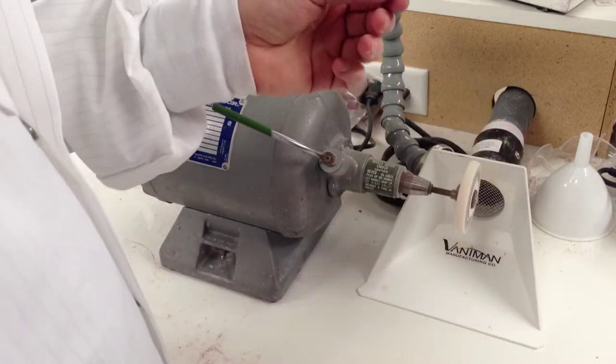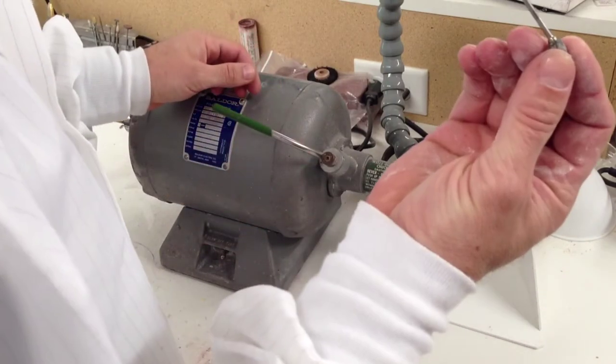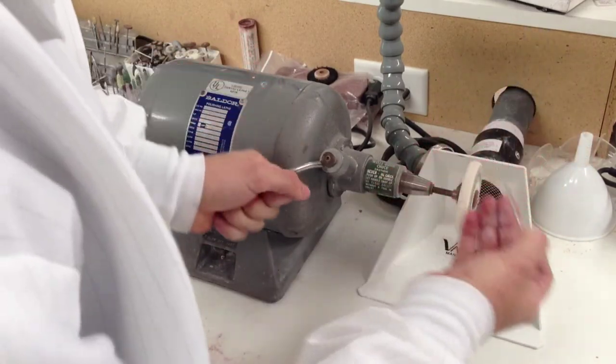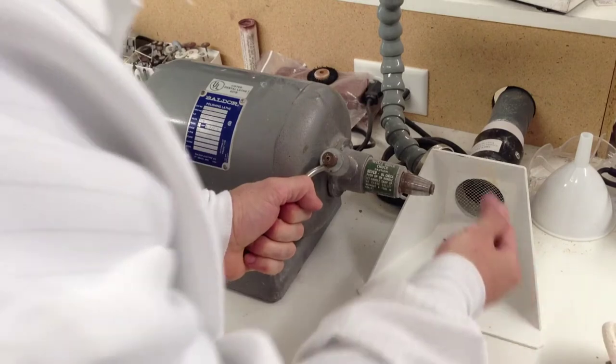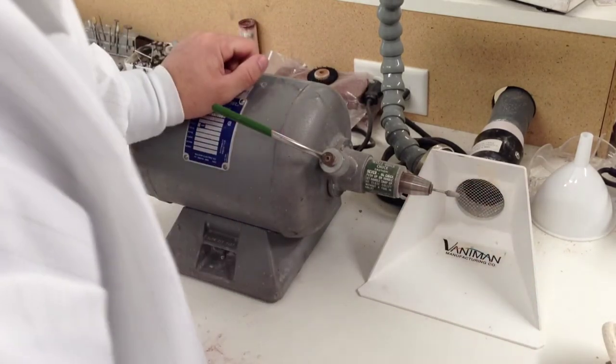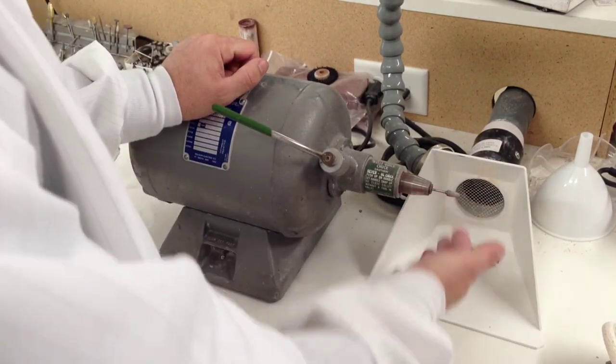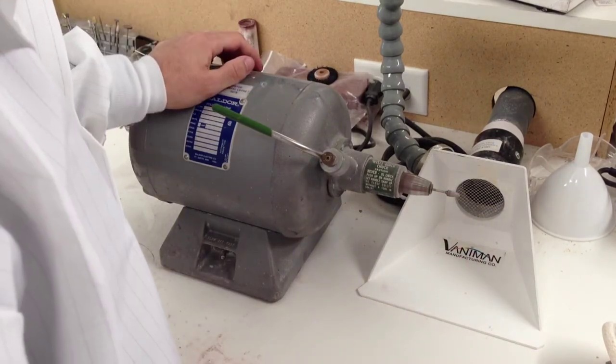The good thing about these quick chucks is they can also receive the standard type burr with a smaller shank, the 3/32 shank. You can stop it, place it in, and use it as you would a handpiece if you need a smaller burr.